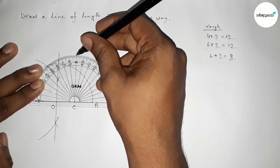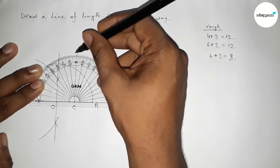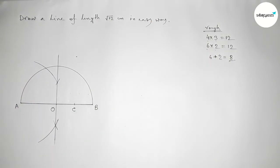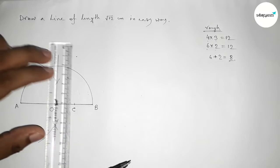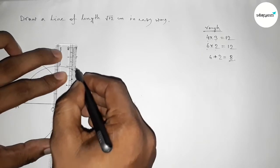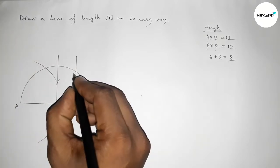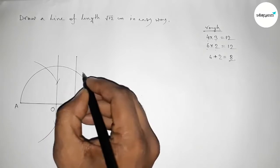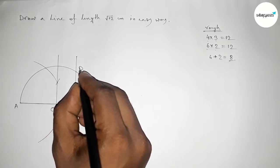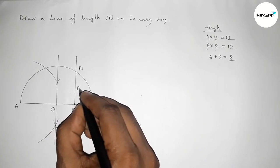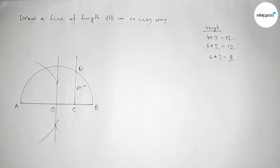Now we draw a 90 degree angle at point C using a protractor. Joining this line meets the semicircle at a point, which we call point D. So CD equals root 12 centimeter.